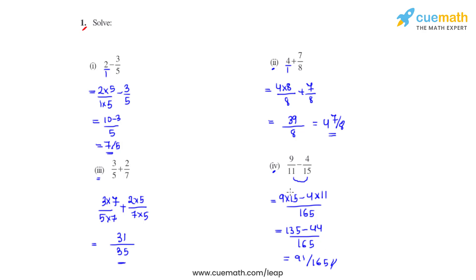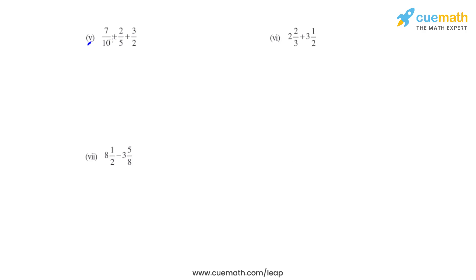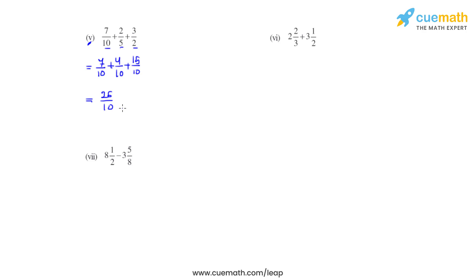Now we will go on to the next set of bits. For the fifth bit, we have three different fractions with three different denominators: 10, 5, and 2. We take the LCM for these three, which is 10. We keep the first fraction as it is. For the second fraction, we multiply numerator and denominator by 2, giving us 4 over 10. Taking the common denominator as 10 and adding the numerators gives us 26. So we get 26 over 10, which as a mixed fraction is 2 and 3 fifths — the answer for the fifth bit.